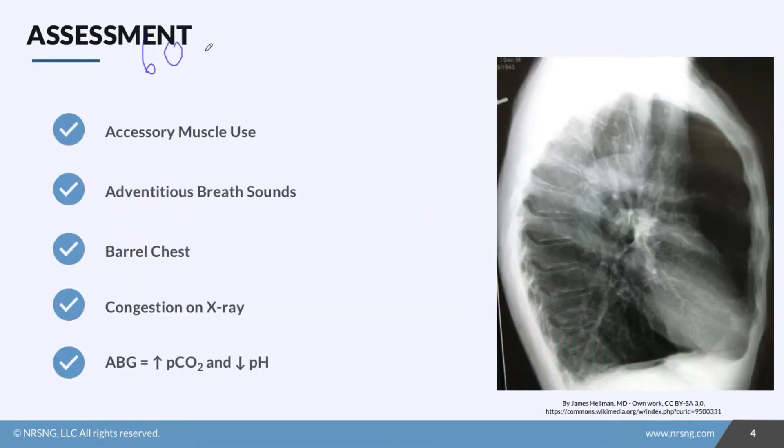Okay so your 60 year old man with COPD comes into the emergency room. What are you going to see? Well you're probably going to see some accessory muscle use. He'll be using his abdomen, shoulders, neck, and those intercostal muscles to get good deep breaths. You'll hear adventitious breath sounds. They could be diminished, crackles, or even wheezes.